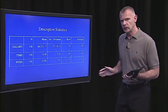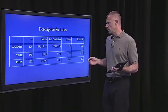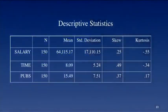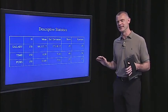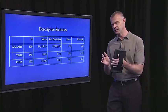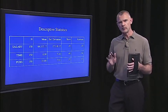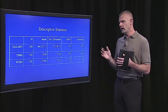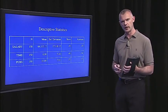Here are some descriptive statistics for this example. There are 150 professors and the average salary is $64,000. The time since PhD is only eight years on average, suggesting a relatively young cohort. The average number of publications for this group is 15. Before running the regression, we have to code our categorical independent variable — gender — as numerical. I coded male faculty members as zero and female faculty members as one.